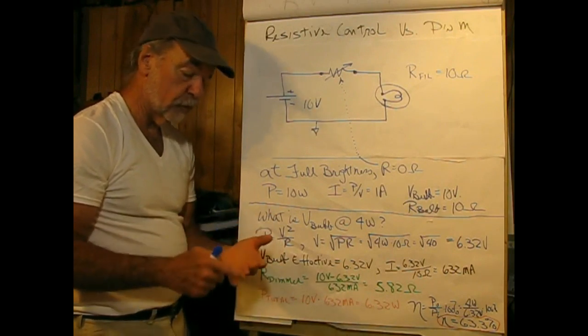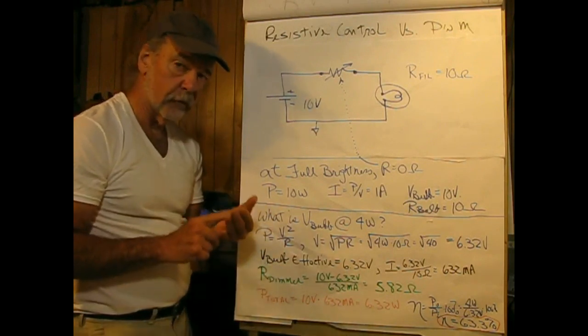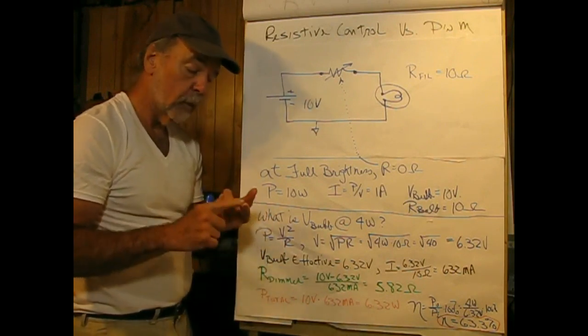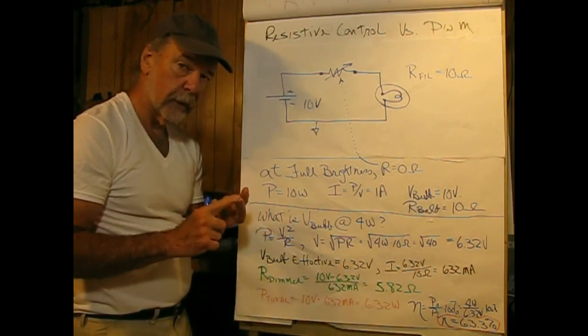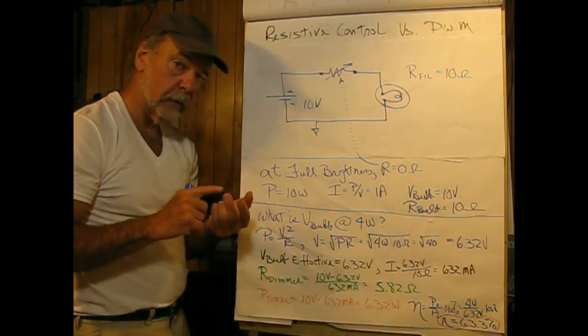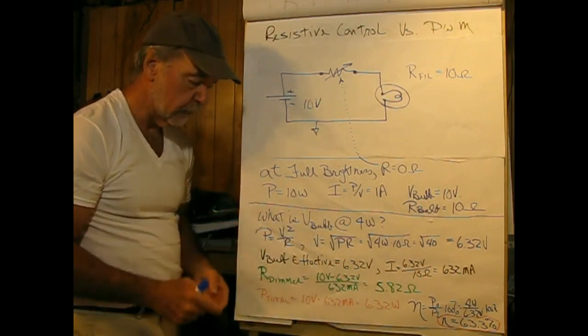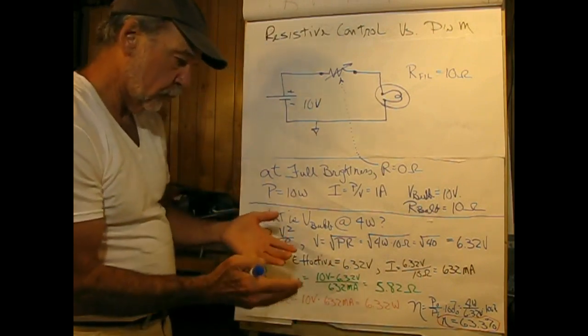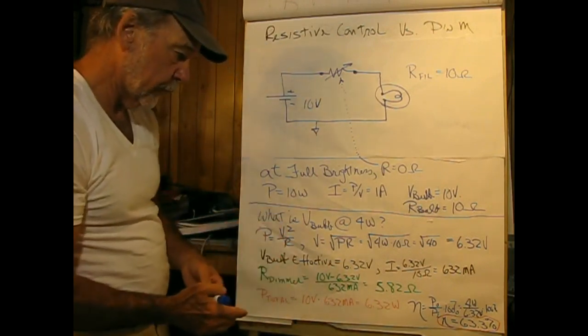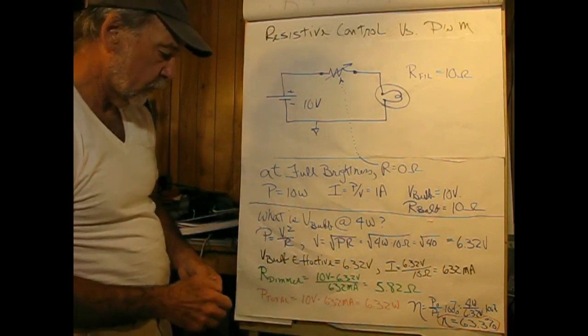One further point: DC is used in three places. One is the scope for direct couple, one is direct current, and the other is duty cycle. So when you see that, you have to put it into the right context.